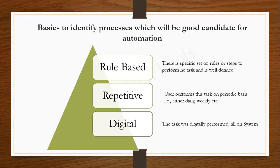Rule-based means specific business rules are tied to each step performed by the bot. For example, if the report was not available at 4 o'clock, what should the bot do? Should it wait five minutes, or drop an exception email to specific people saying the report is still not available? There is decision-making involved at every step. If there is something fuzzy, the bot cannot decide on its own — you must specify: if condition A then do B, if condition C then do D. These three criteria help identify whether a process is a good fit for automation.